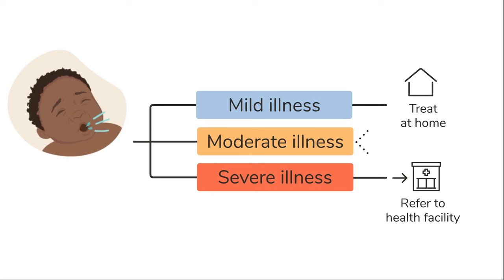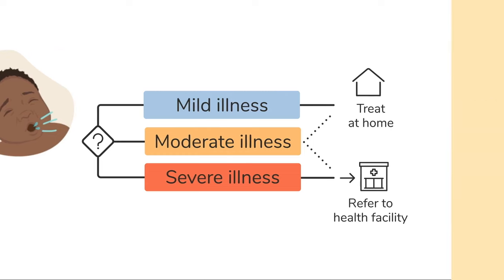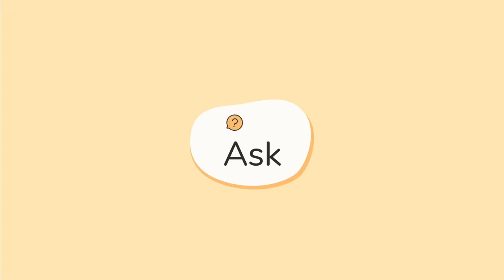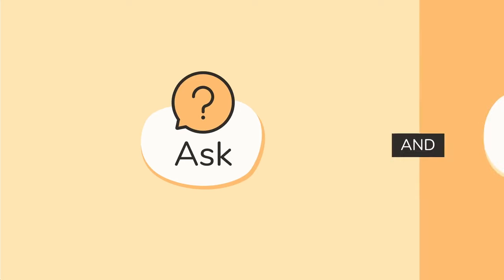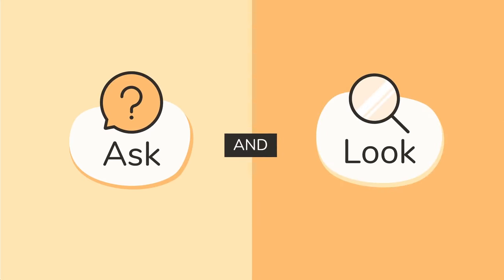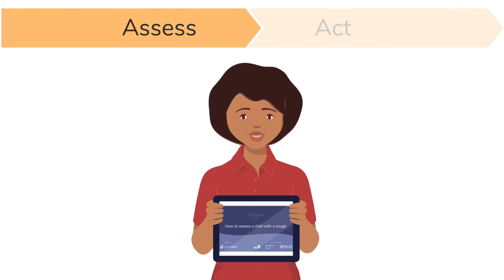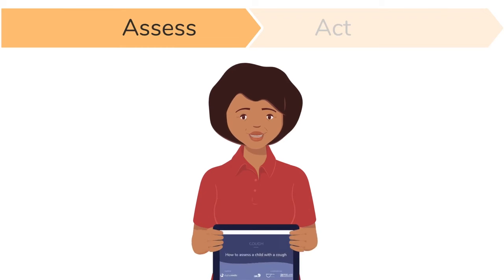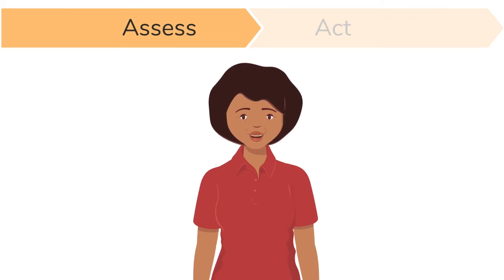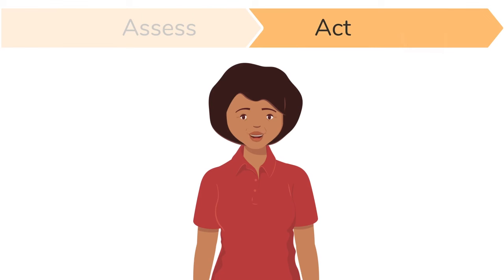If it is a moderate illness, we can decide whether to treat or refer the child. But how do you recognize if a cough is due to an illness that is mild, moderate, or severe? The answer is to find out more by asking the caregiver a few questions and looking at the child. This video will show you how to assess a child's signs and symptoms. Look out for another video in this module that explains how to act and treat the child based on the findings of this assessment.